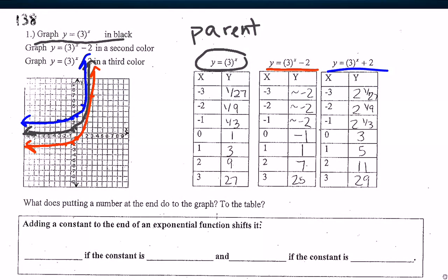So think about the difference between my black equation and my first one, the red. The difference in the equation is I have this minus 2. And what happened to my graph? You don't need to draw this, but I'm going to point. What happened to go from the black to the red? How did it move? And then what happened when I added 2 at the end? How did that move from my original, from my black? Think about what you think this does.